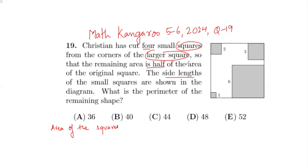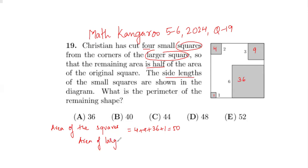The remaining area is half the area of the original square. We have four small squares: three times three is nine, six times six is 36, and one times one is one. So the remaining area is 9 + 36 + 1 + a few more pieces = 50, which is half of the original. Therefore the area of the larger square is two times 50, which is 100.